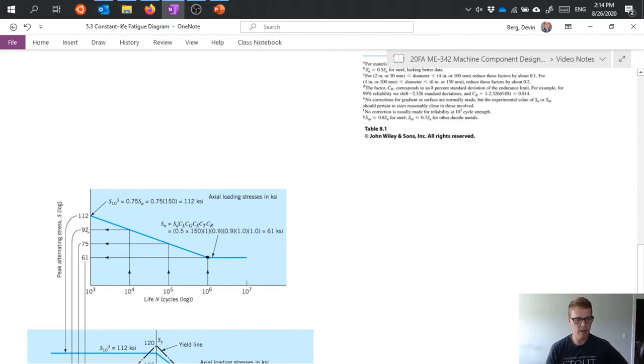So through the magic of television I have the SN chart down here already and basically what our two calculations just did is gave us this point here and this point here. Now on the chart it's showing points for 10 to the fourth cycles and 10 to the fifth cycles as well luckily we could just calculate those because we know everything else about it and I just want to talk about that for a second.